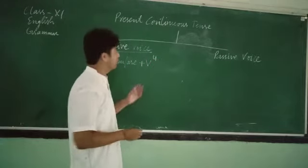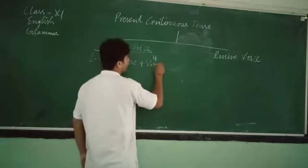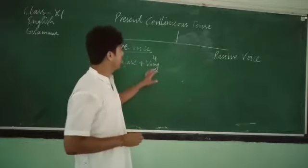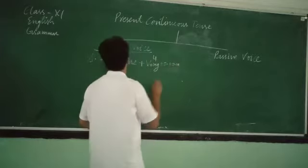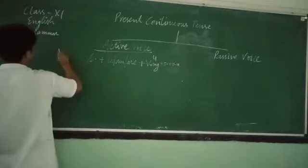What is V4? If you add ING to V1, it is called V4. After that, object, then otherwise. And since it is affirmative sentence, so we end with full stop.